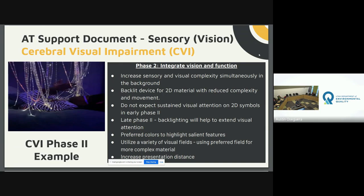We still need a lot of visual accommodations in phase two to help students see and process. You can start to increase sensory and visual complexity simultaneously. Continue using backlit devices for 2D materials — in phase one they probably can't see 2D materials, it needs to be more tangible. In phase two you can use 2D materials, but don't expect sustained visual attention on 2D symbols. You'll see visual fatigue after many vision activities; if they look away, they may just need a break before returning.